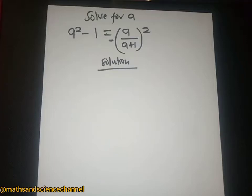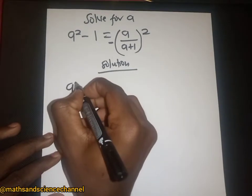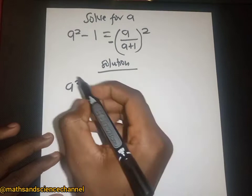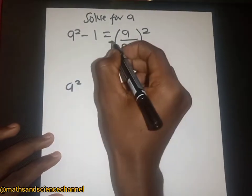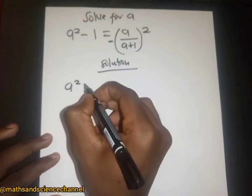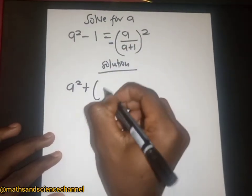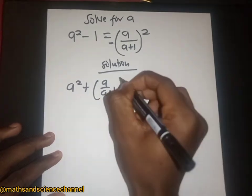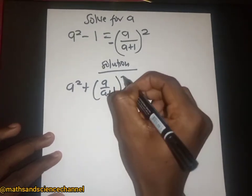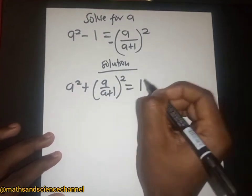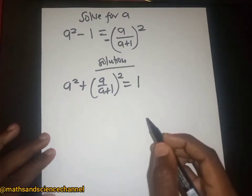Hello students, welcome once again to another section. This time we have to solve for a in this equation. Let's send everything to the other side, so the negative becomes positive: a over (a plus one), then squared, being equal to the other side.